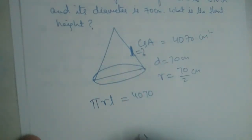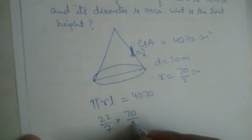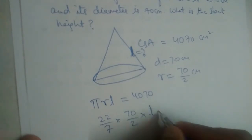So π is 22/7, radius is 70/2. See, this 70 and this 7 will cancel easily. You can write 35 also in place of 70/2, no issues. And l we don't know - we need to find that.